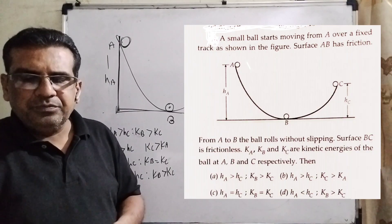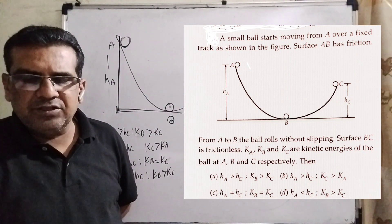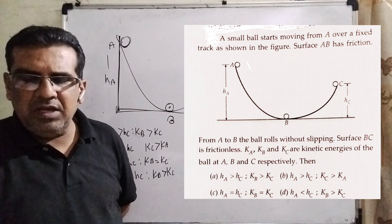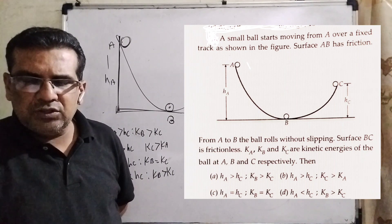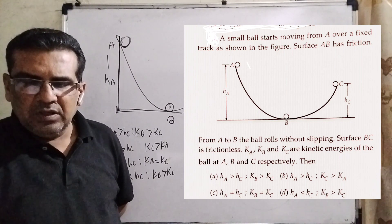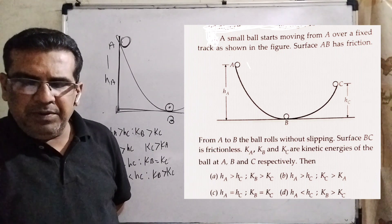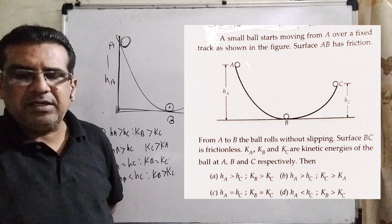Here's the question. A small ball starts moving from A over a fixed track as shown in the figure. Surface AB has friction. From A to B, the ball rolls without slipping. Surface BC is frictionless. KA, KB, and KC are kinetic energies of the ball at A, B, and C respectively.